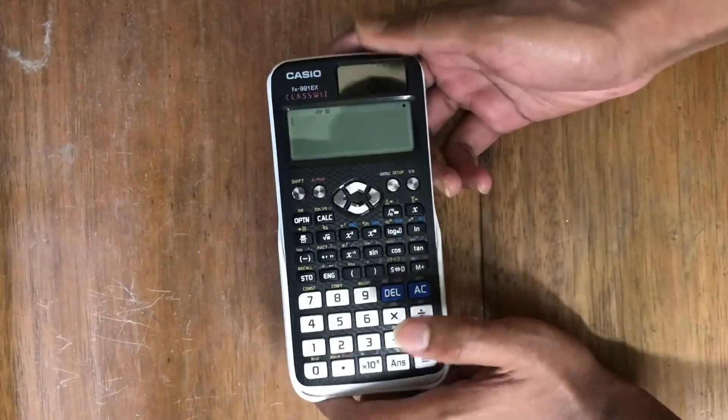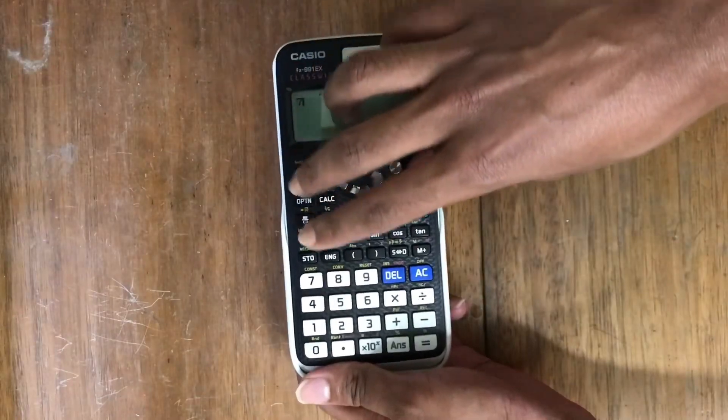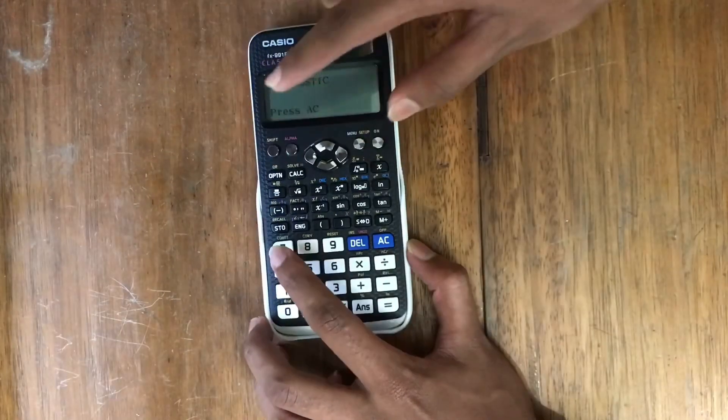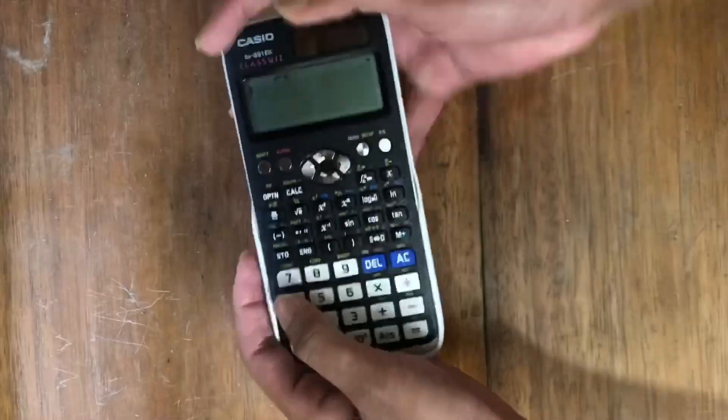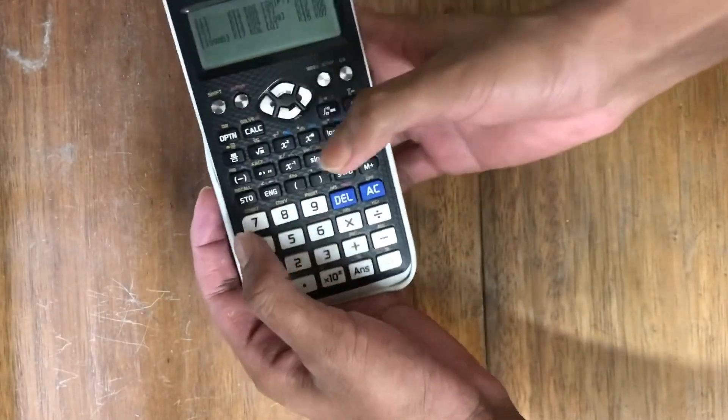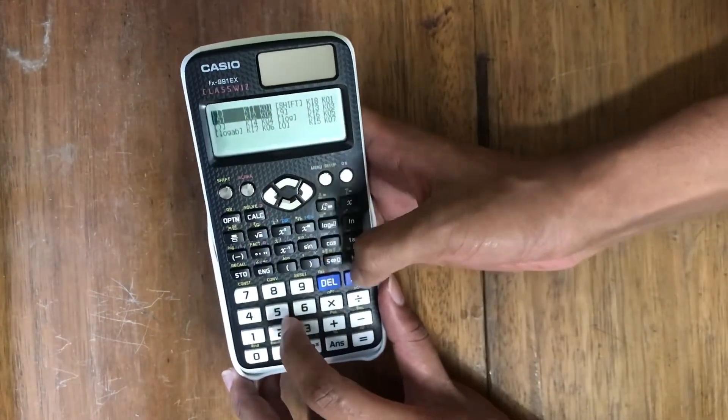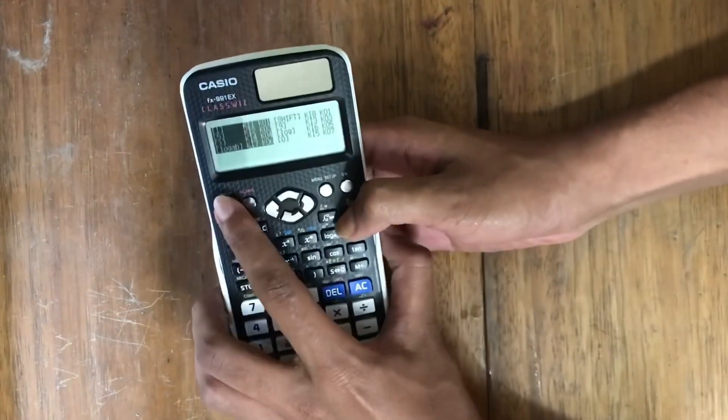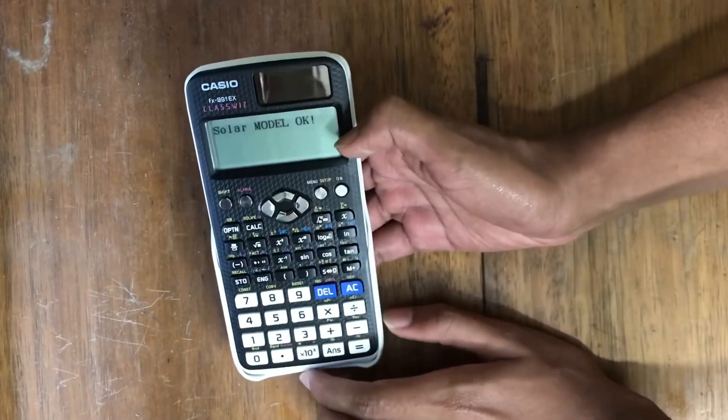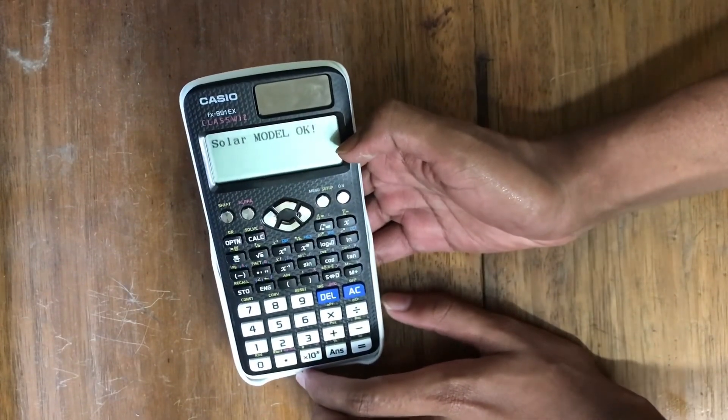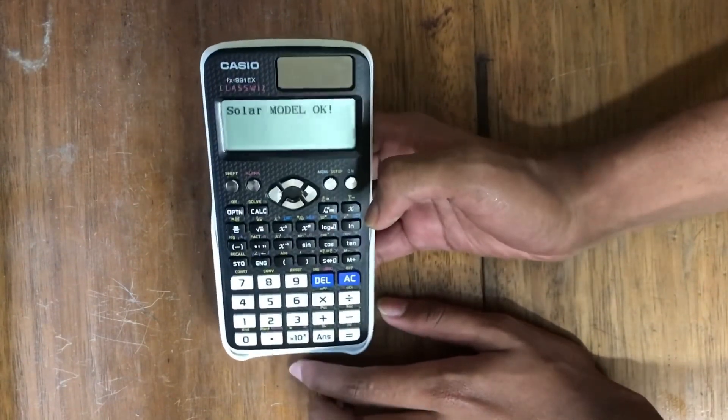Now we'll see the regular method we use in any calculator. We will press shift plus seven. Then a diagonal stick will come—press AC. Then we click on it. Here are some numbers we have to click them accordingly. After clicking it successfully, it will show 'Solar Model OK.' In the fake one there will show 'Battery Model OK,' but here it's written 'Solar Model OK.'